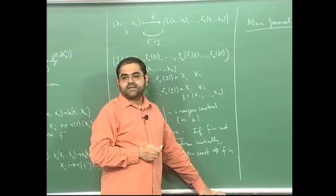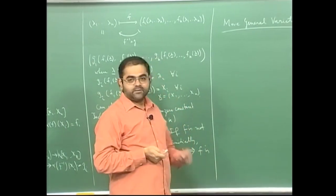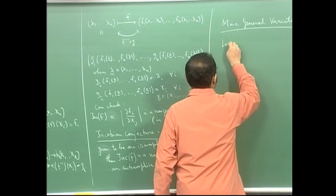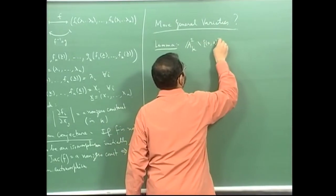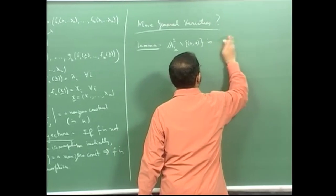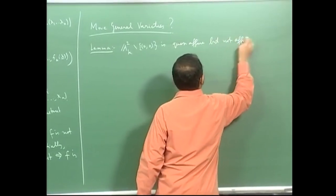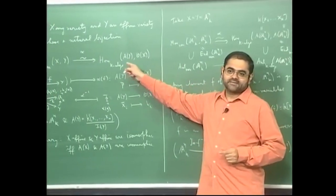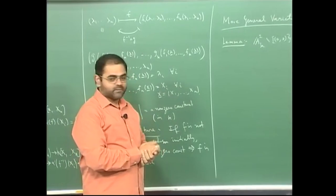The question is: are there quasi-affine varieties that are not affine? I want to give an example of such a specimen. Here is a claim — really a proposition — that A^2_k minus the origin is quasi-affine but not affine. It is quasi-affine because it is a non-empty open subset of the affine variety A^2. To show it is not affine means it cannot be isomorphic to any affine variety.